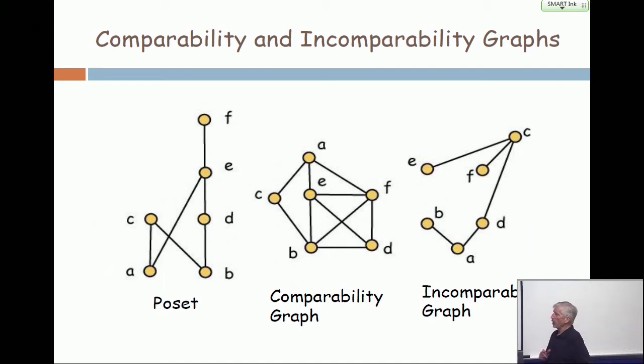Take a moment and look at that middle one and see if you agree that that's the comparability graph. For example, in the middle, I have an edge between A and F. Go back to the poset on the left. Is A comparable with F? Yes. One of them is less than the other. Comparability just means that you can make a comparison.